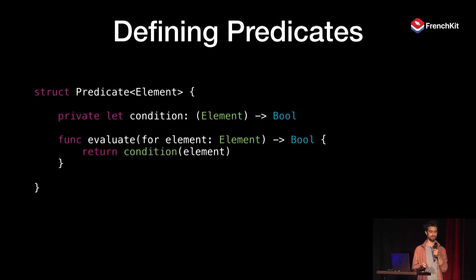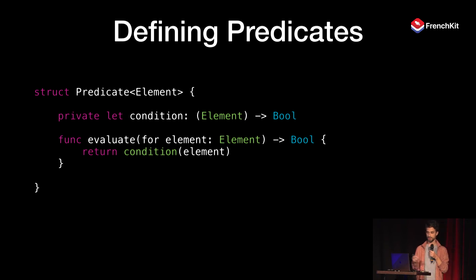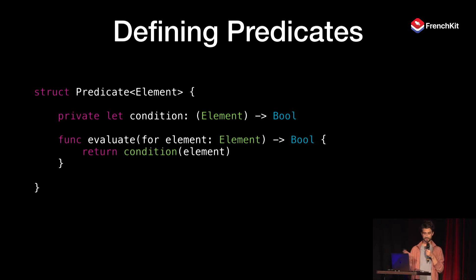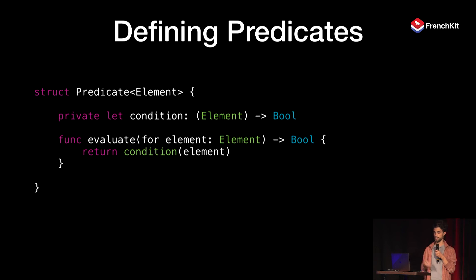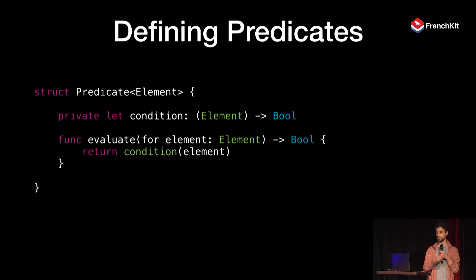A predicate is basically a fancy mathematical name for a function that evaluates to a boolean value. So how do we store it in Swift? We define a generic Predicate type. It stores a condition — a function that takes an element and returns a Bool — and we have a function to evaluate the predicate, meaning calling the condition. Pretty simple.